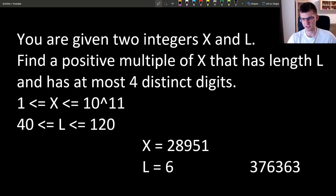The length is exactly 6 and the digits that occur are 3, 6 and 7, so there are 3 of them and it satisfies the condition at most 4. But how to do it for much bigger x? I strongly recommend that you pause the video right now and try to solve the problem on your own.